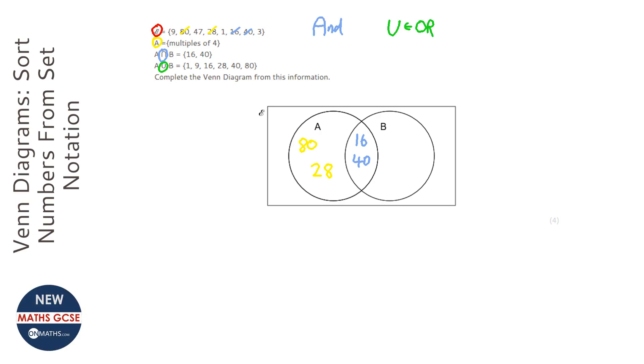So let's have a look and see which numbers we haven't used yet in that list. So we've used the 16, we've used the 28, we've used the 80, we've used the 40. So we're left with the 1 and the 9. Let's cross that off from my list. So that leaves 47 and 3.